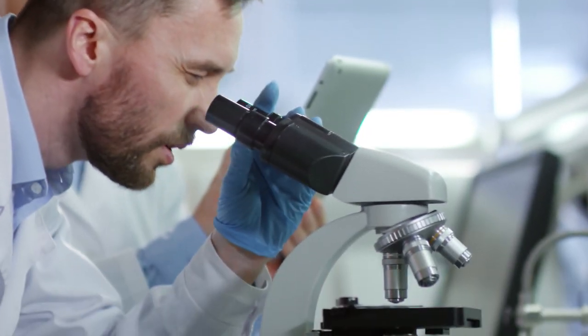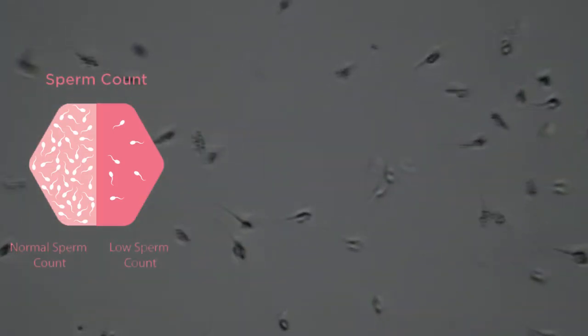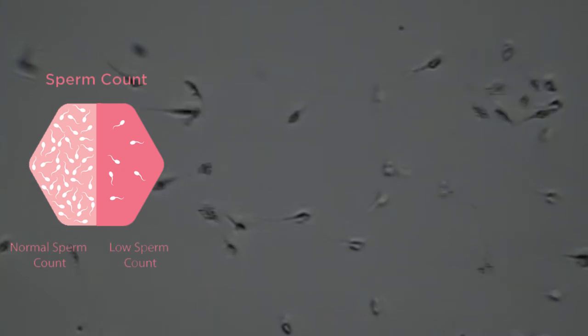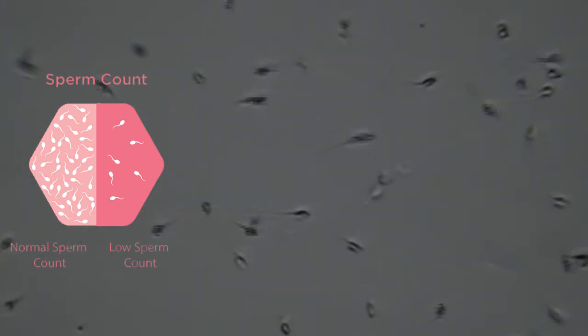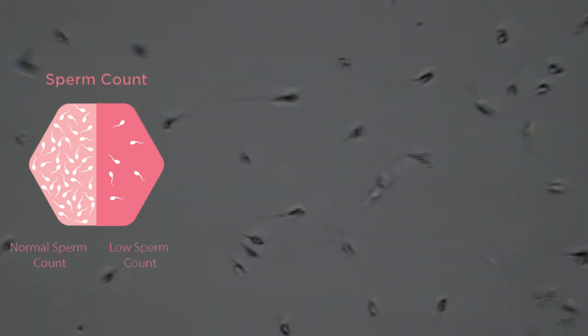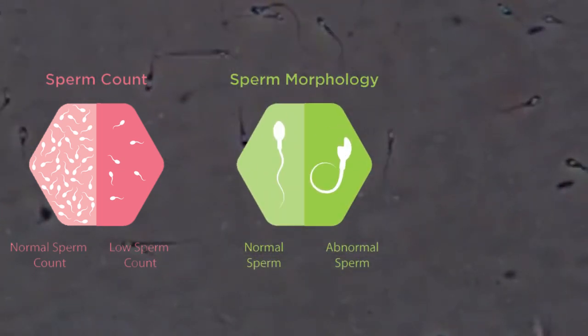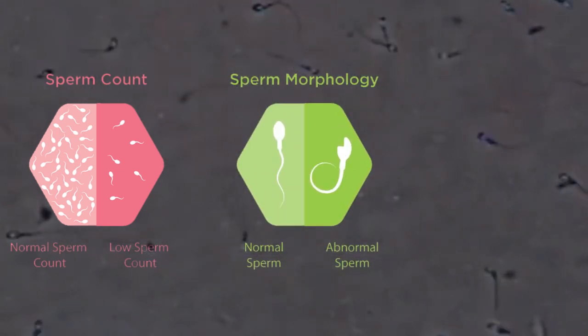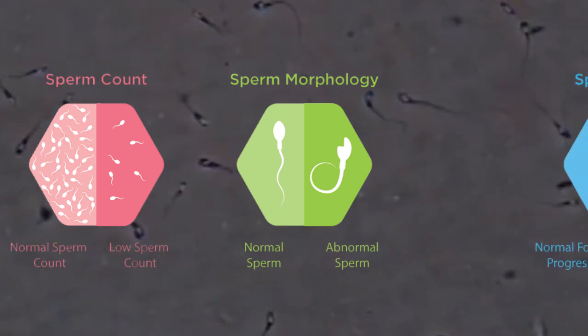A semen analysis is a basic diagnostic test to assess male fertility. As part of semen analysis, three major parameters of sperm are analyzed, which includes sperm count — the number or concentration of sperms — sperm morphology — the shape or structure of the sperm — and the third parameter being sperm motility.